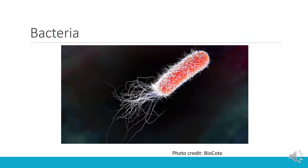Bacteria concentrations in the water are also frequently measured as an estimate of water quality. Escherichia coli, or E. coli, which is a bacteria found in the guts of mammals, including humans and dogs, is frequently measured and used as an indicator of water quality.